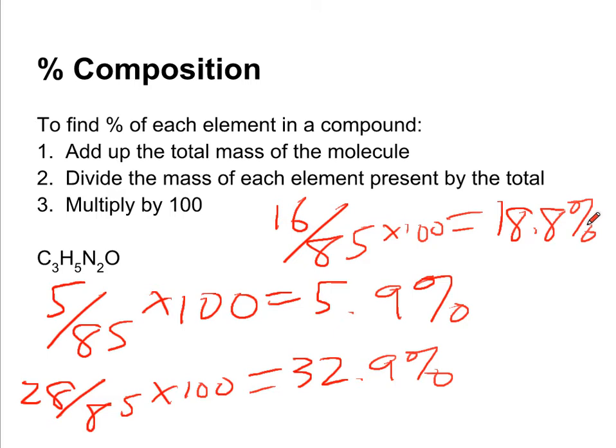A good way to check yourself when you do problems like this, they should add up to 100, or maybe 99.9 or 100.1, depending on how you round.